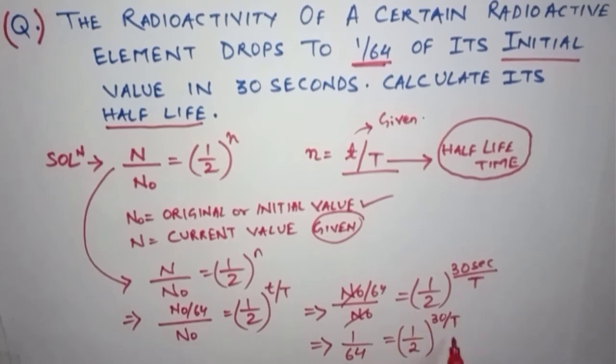So now what will we do? We will write 1/64 in the method of 1/2. So we can write 1/64 as (1/2)^6, yes, 2 to the power 6 is 64. So we can write (1/2)^6 equals (1/2)^(30/T).